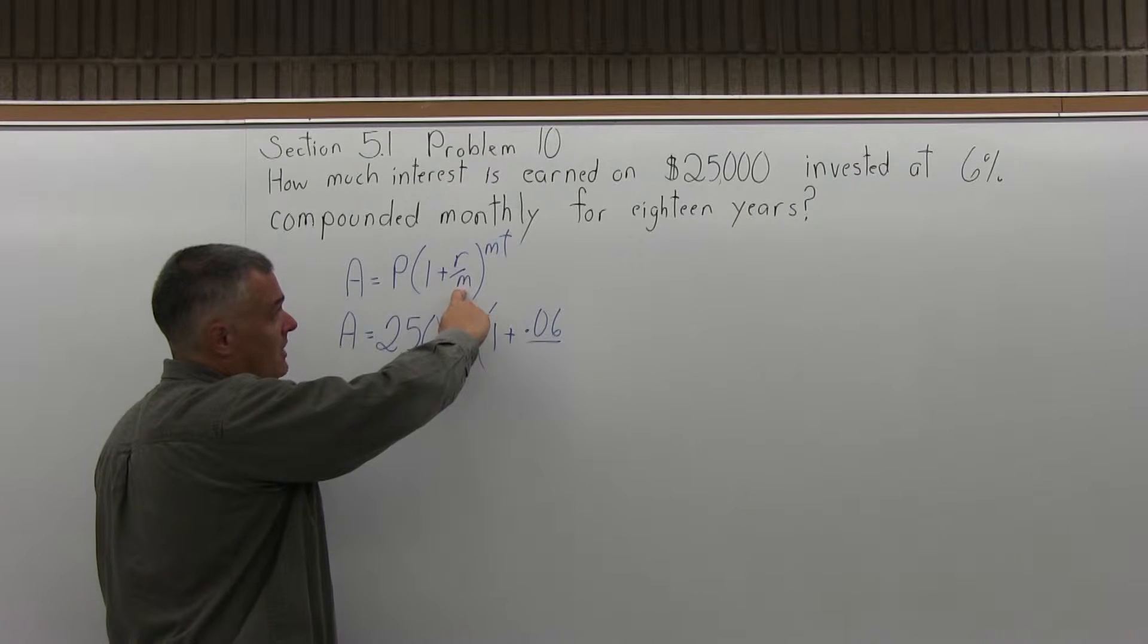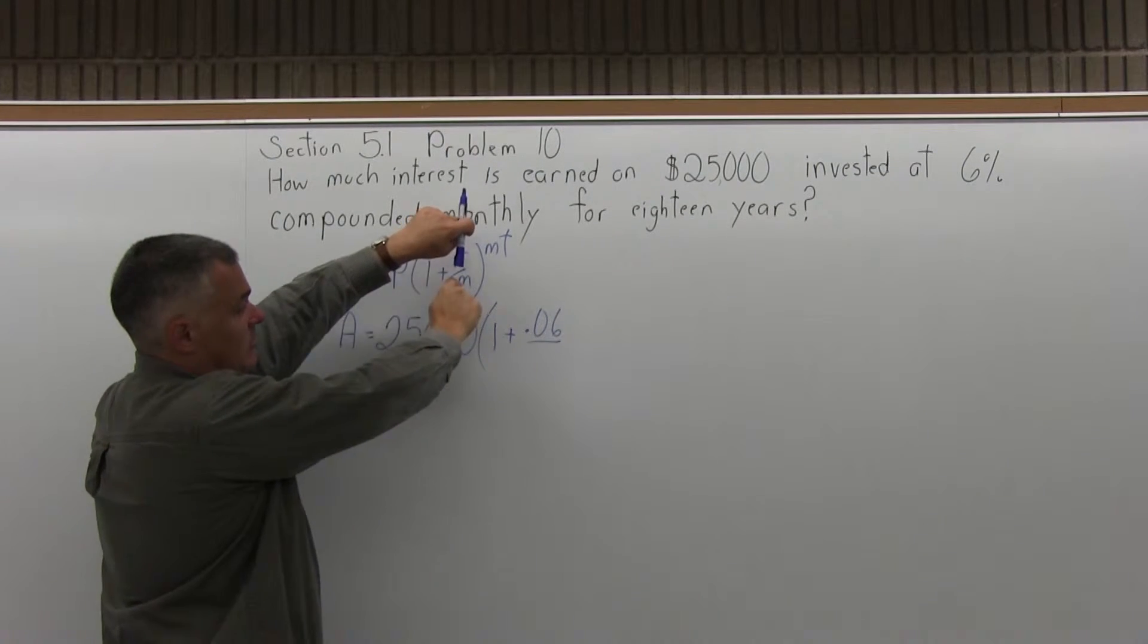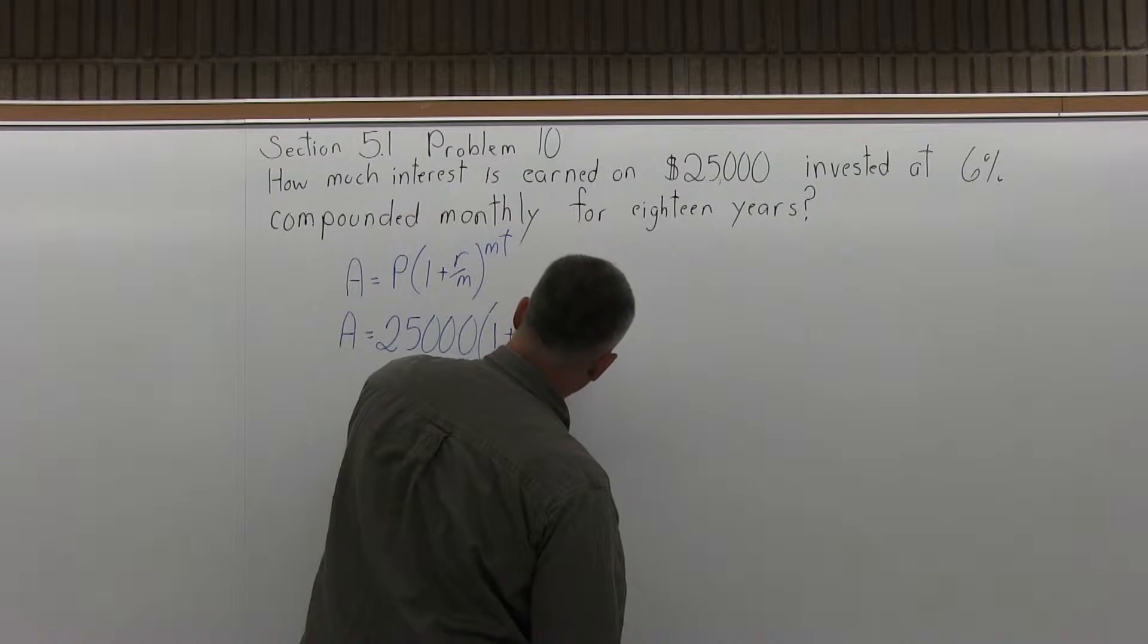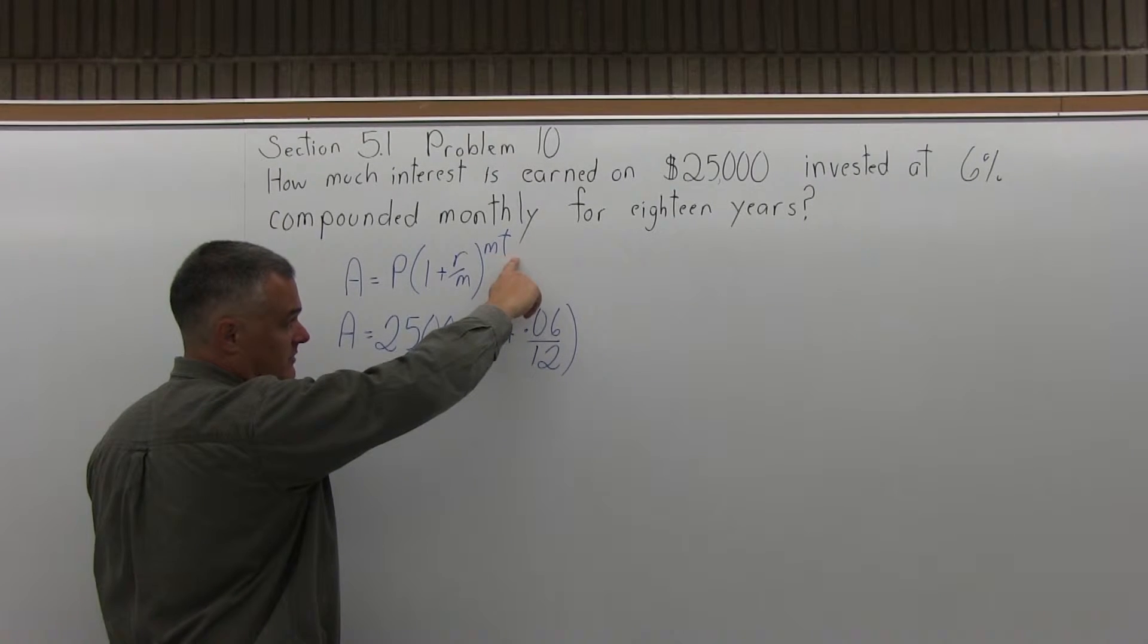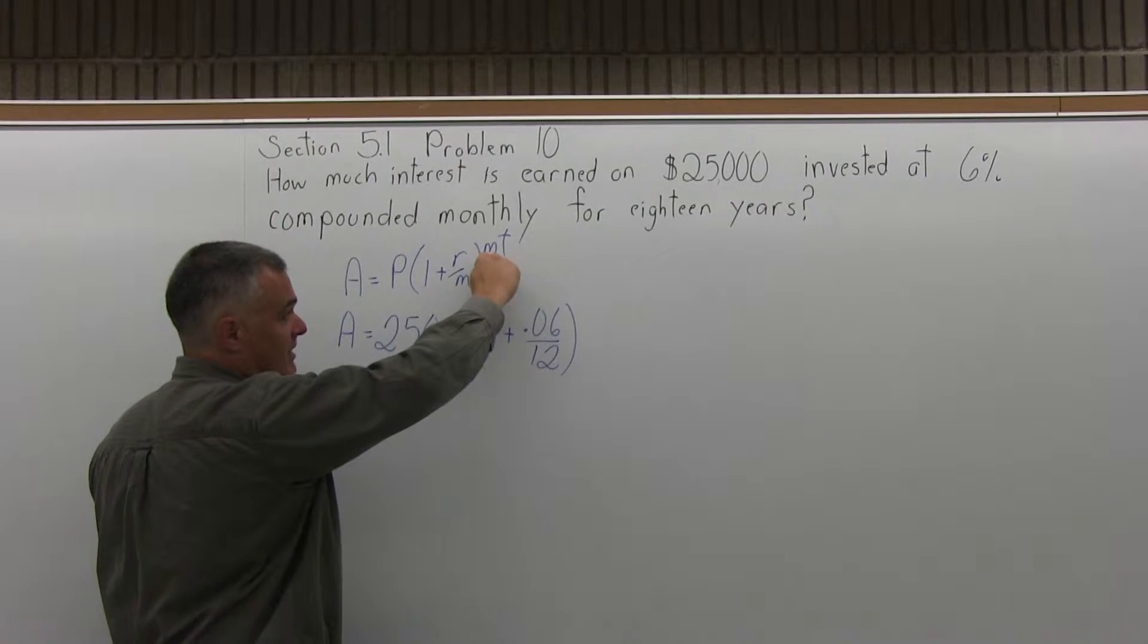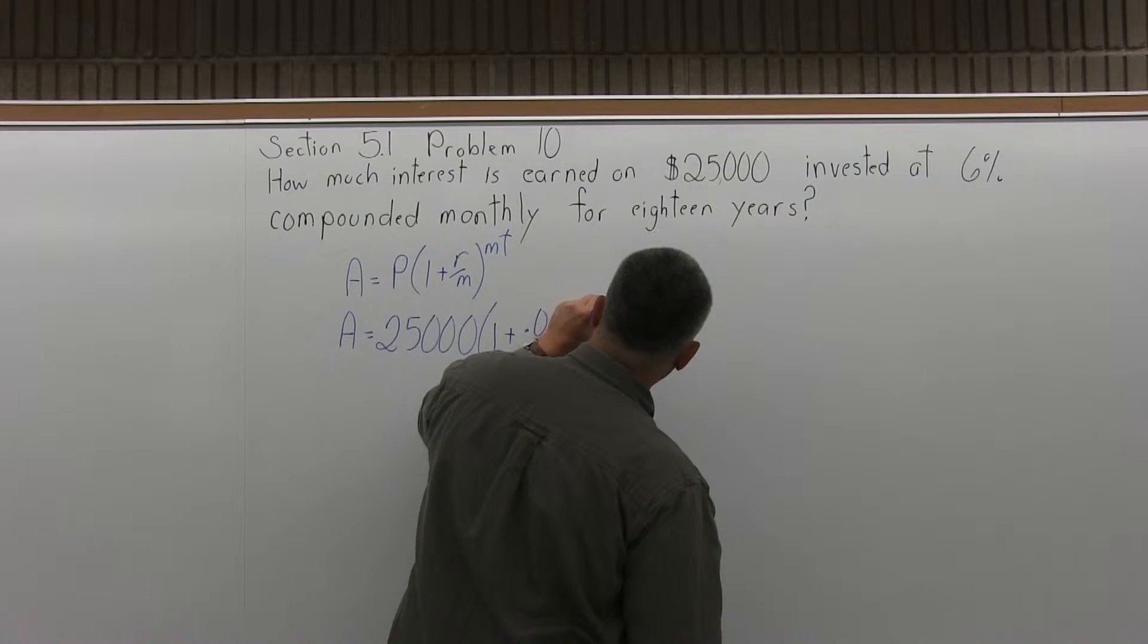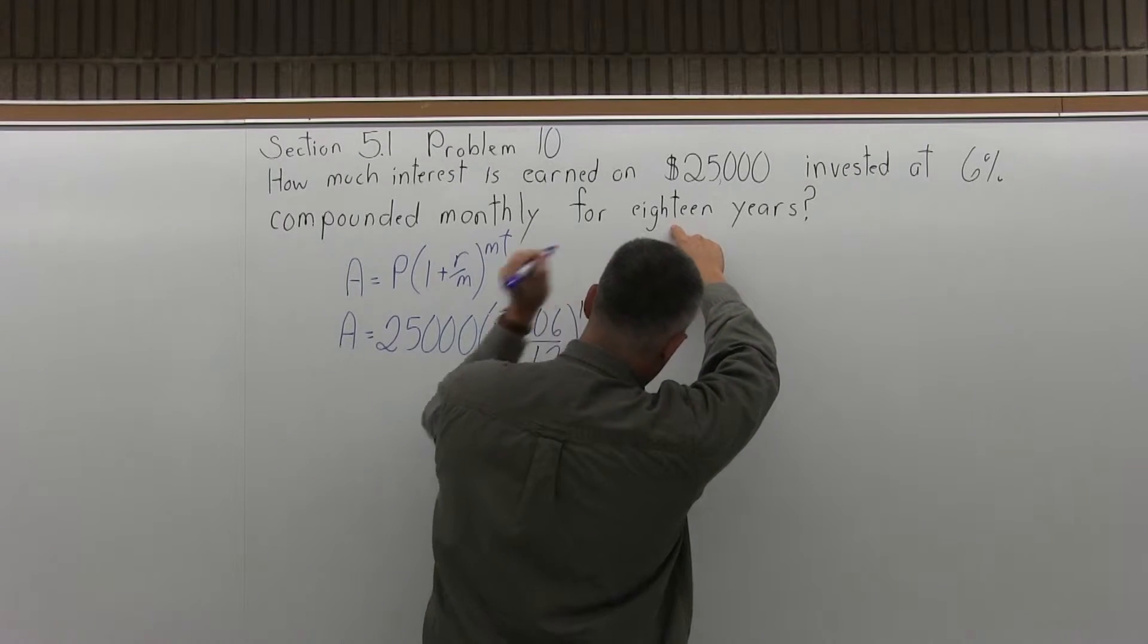M is the number of times compounded per year. This problem has monthly compounding, so M will be 12, 12 months per year. I close the parentheses now and make an exponent of M times T to complete filling out the formula. M is 12 for monthly compounding, and T is 18 because the question says 18 years.